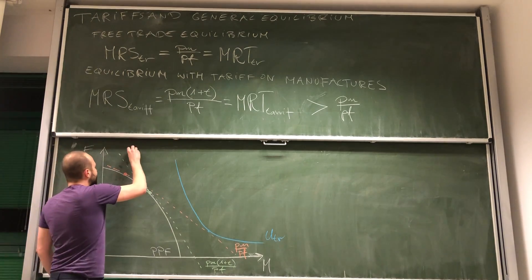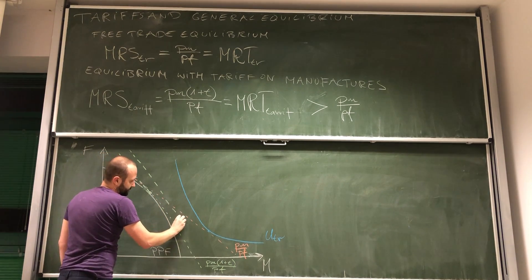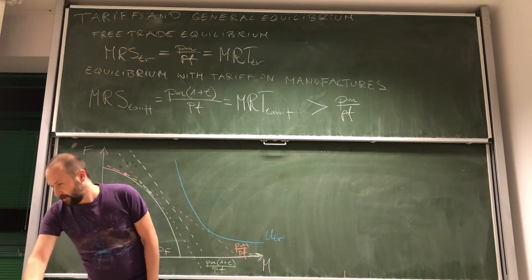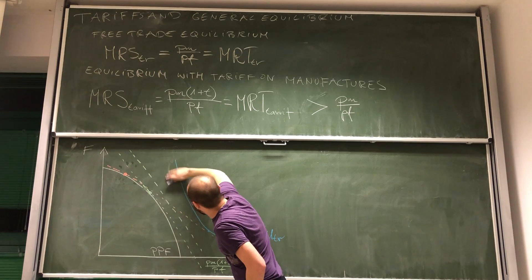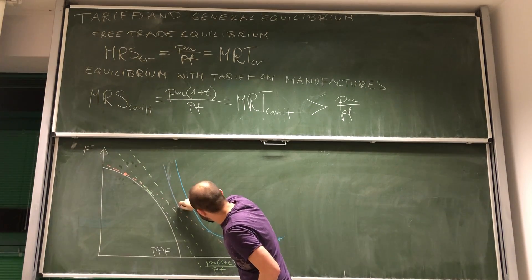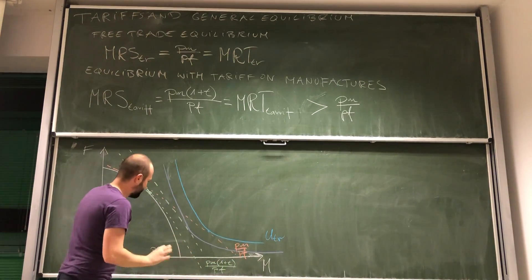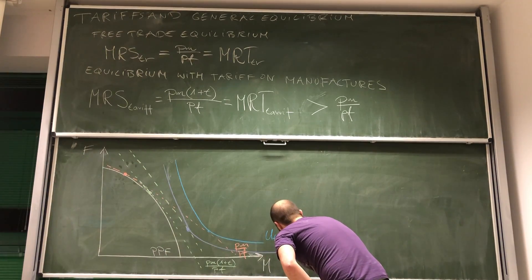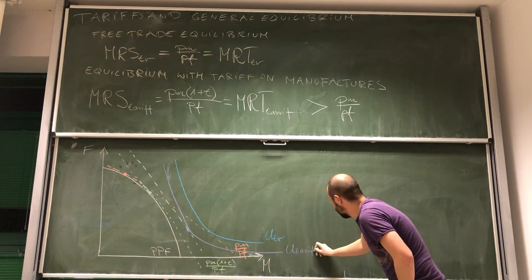We need to draw another line, and now we can draw another indifference curve. This is the hardest part — but there we go. Very nice, very proud of myself. Now this is the new utility curve, and this is U-tariff.